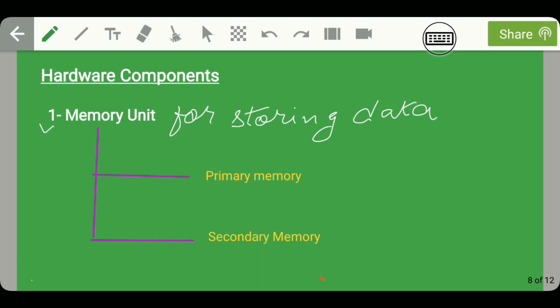The primary memory is again of two types: RAM and ROM, where RAM stands for Random Access Memory and ROM stands for Read Only Memory. RAM is a type of memory which doesn't contain data if the power is off, whereas ROM contains data even if the power is off. This is the basic difference between RAM and ROM.